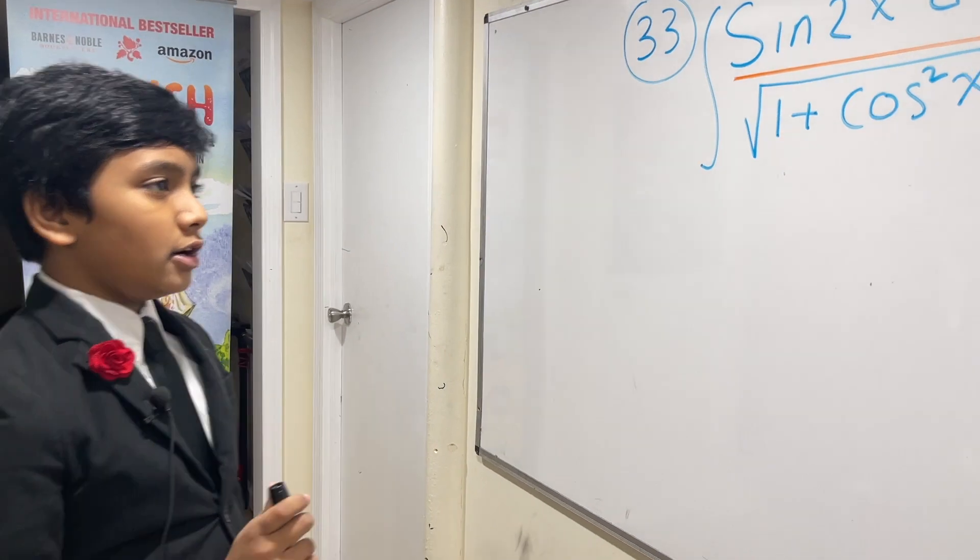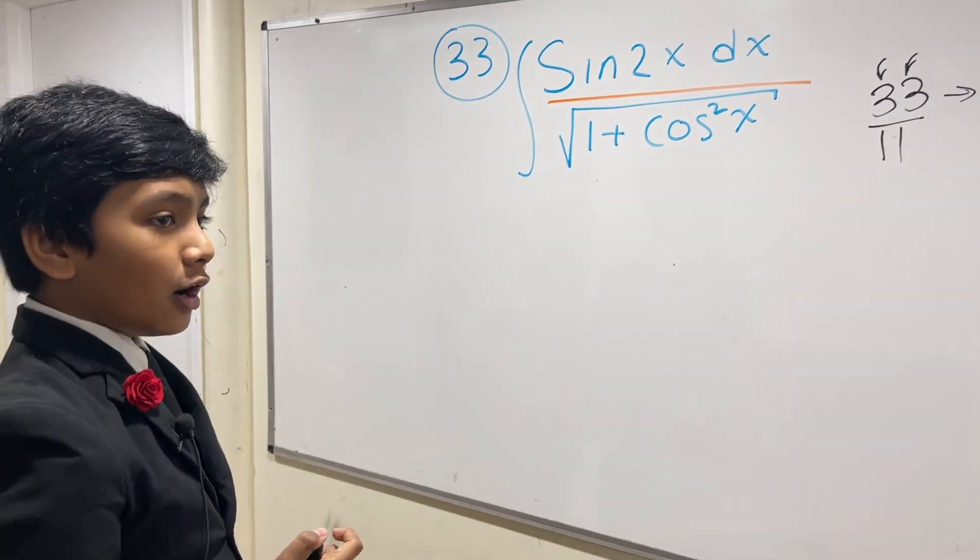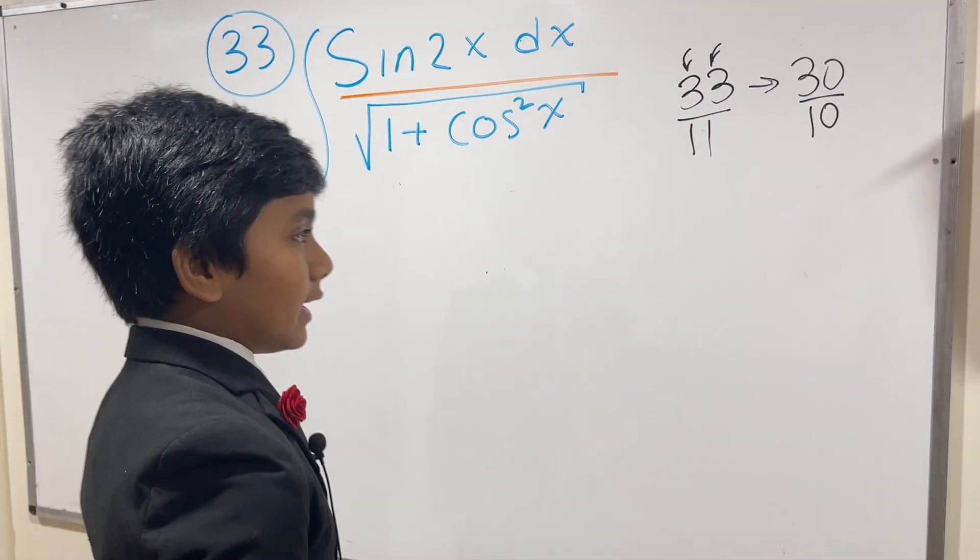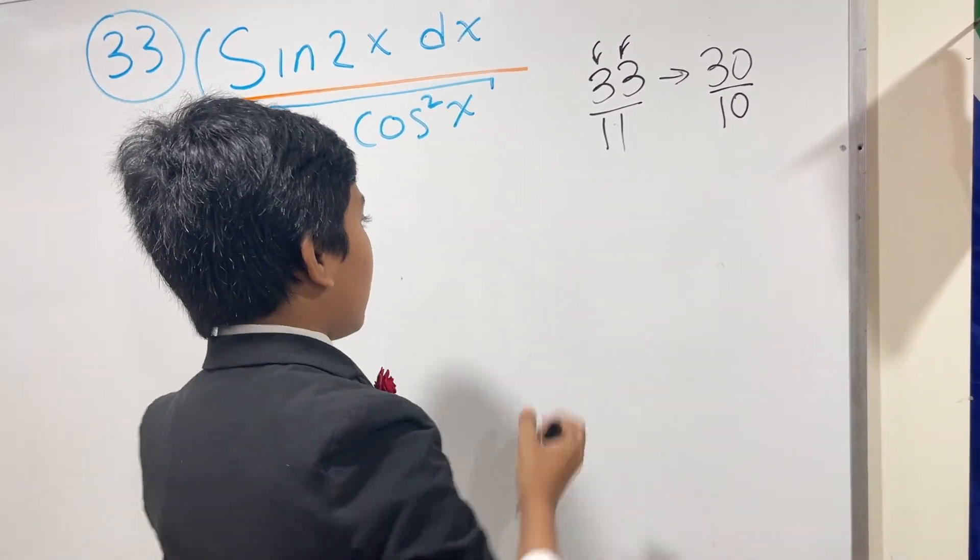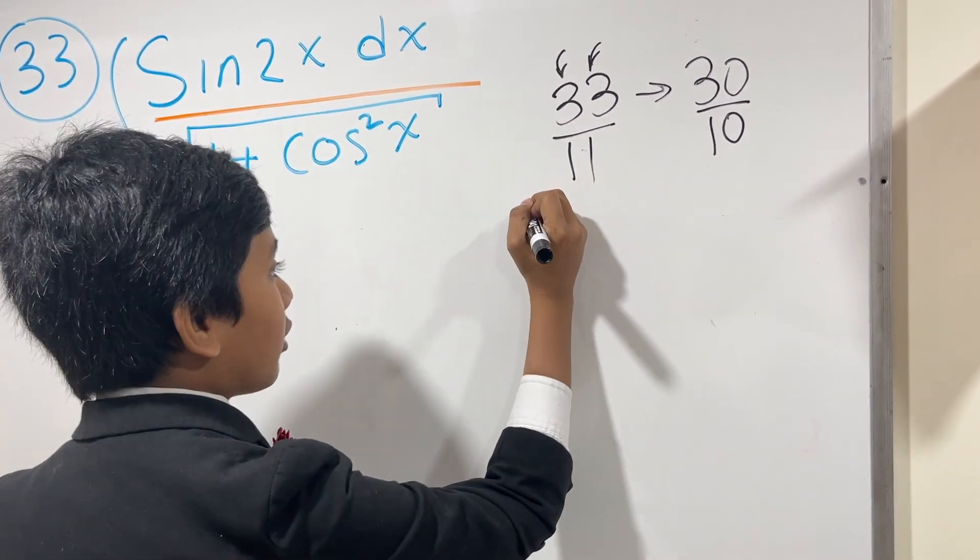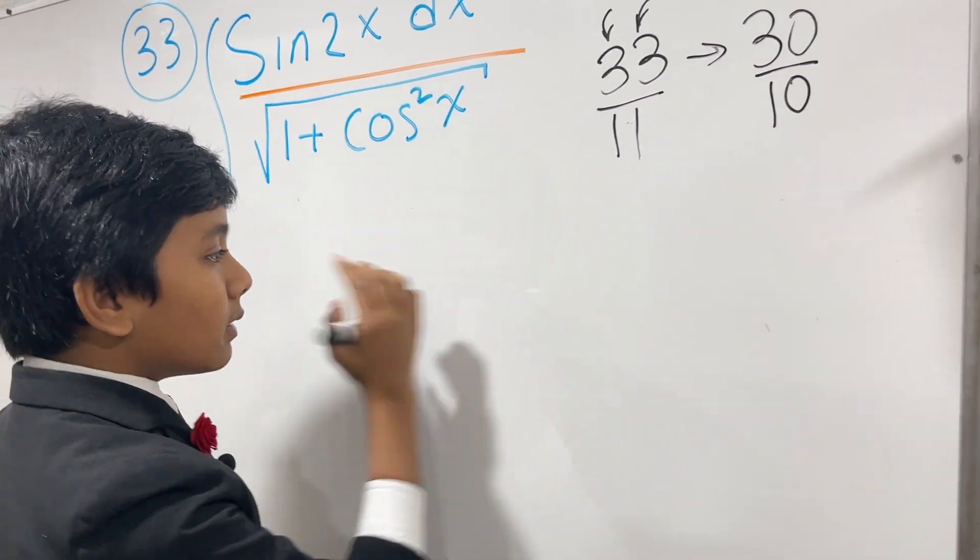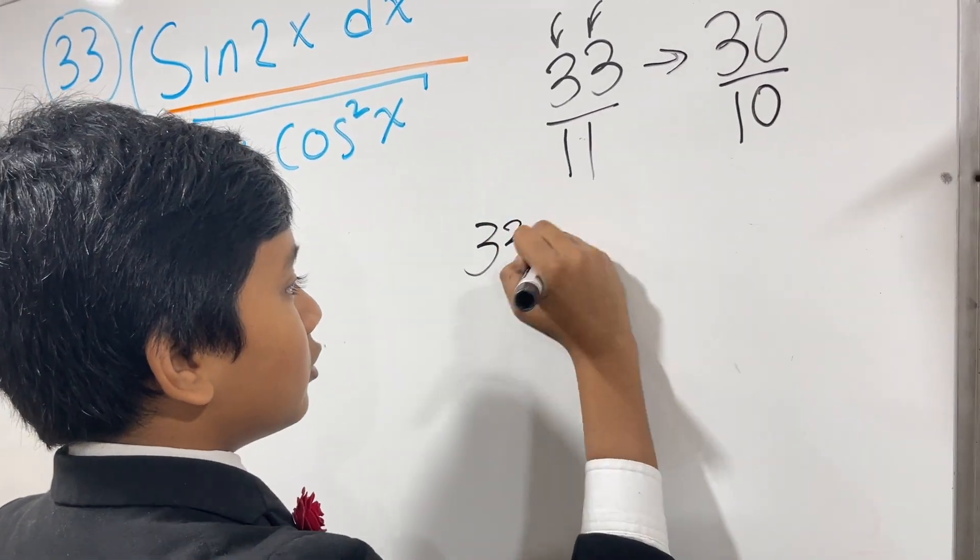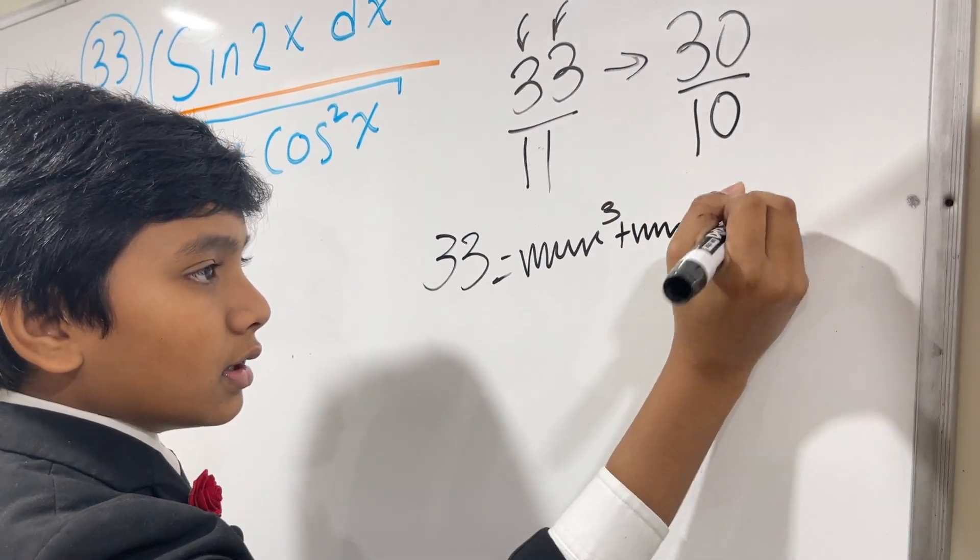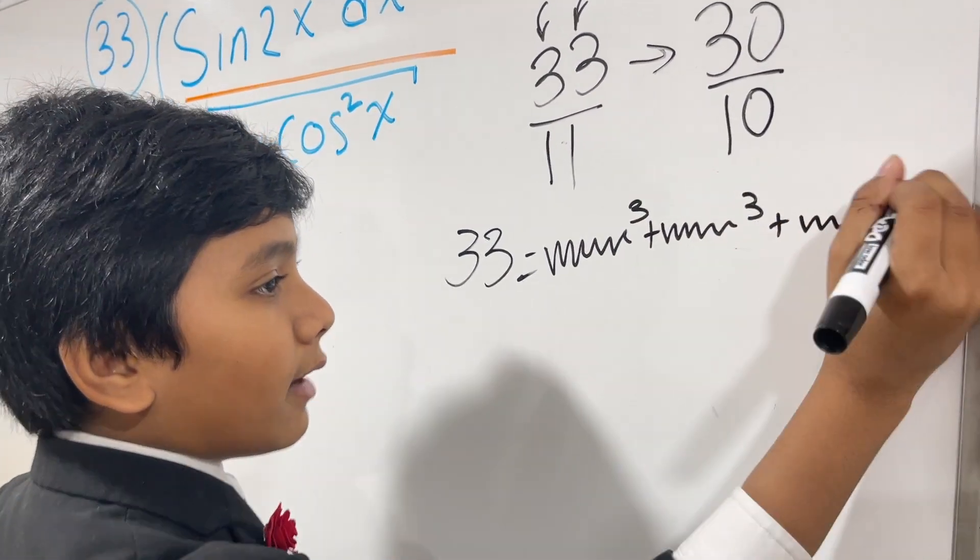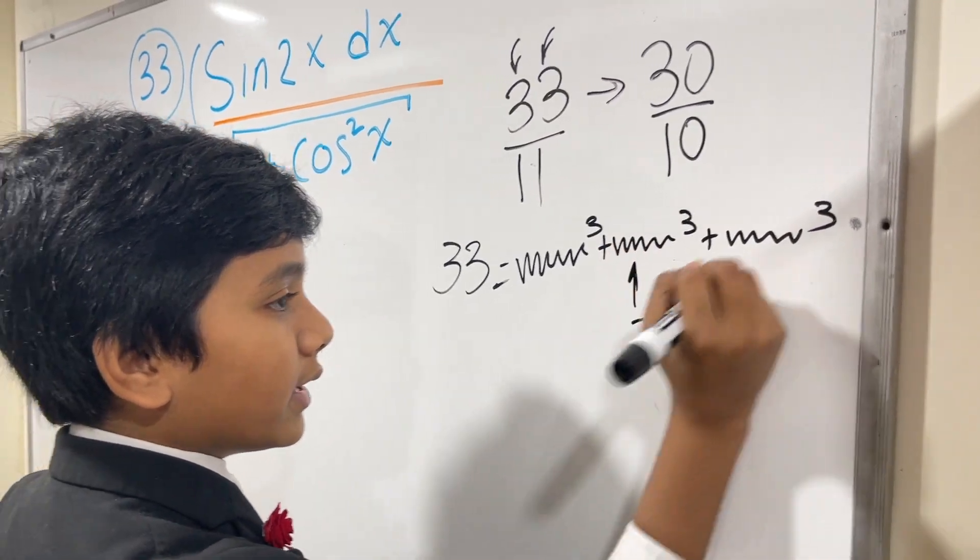And 33 is also kind of maybe part of an unsolved problem in mathematics because it's the sum of three cubes. The numbers behind the cubes are like all nine digits long, so I can't remember them all, but I can tell you that two of them are negative.